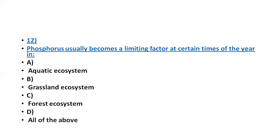Phosphorus usually becomes a limiting factor at certain times of the year in aquatic ecosystems, because it remains as sediment in oceans and seas. That is why it usually becomes a limiting factor at certain times of the year.